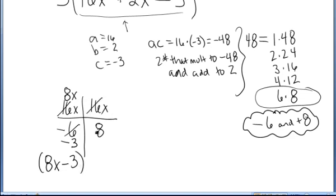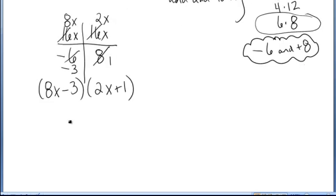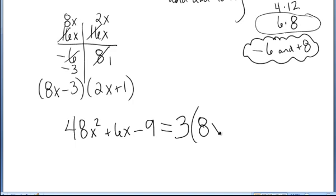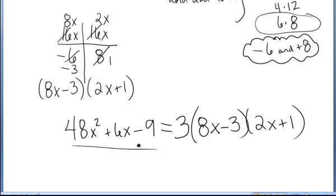16x over 8: I pull an 8 out of the 16 and an 8 out of the 8. When you pull 8 out of 16, you're left with 2x, and when you pull 8 out of 8, you're left with 1. So the factor is 2x plus 1. Finally, 48x squared plus 6x minus 9 — we factored out a 3 out front, and then multiply by 8x minus 3 times 2x plus 1. This is the expanded version and this is the factored version of the polynomial.